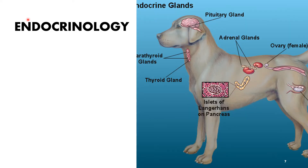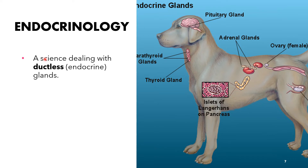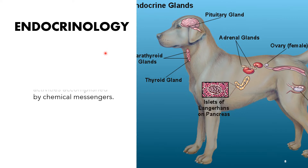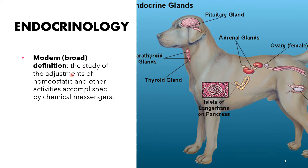Endocrinology is a science dealing with ductless or endocrine glands. The word endocrine comes from the Greek word 'endo,' meaning within, and 'krinin,' meaning separate. Endocrinology is also defined as the study of the adjustments of homeostatic and other activities accomplished by chemical messengers. The major chemical messengers referred to here are the hormones.